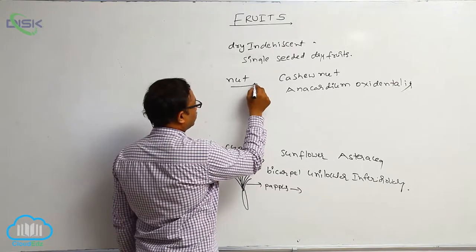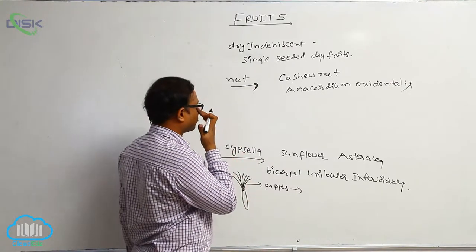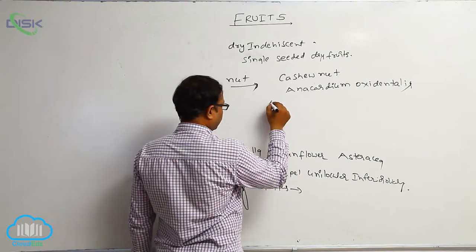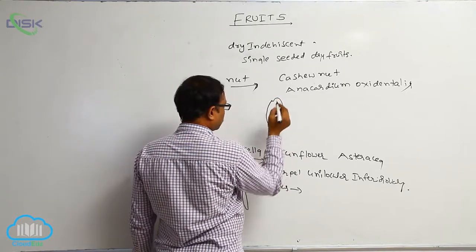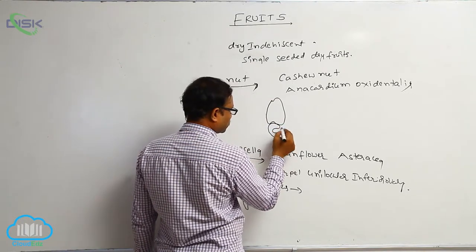I am also explaining that in the cashew nut, the false fruit is present that is known as the pedicill. For example, in cashew nut diagram, it is the pedicill part. Below that, the true fruit - it is the nut.